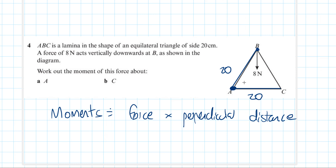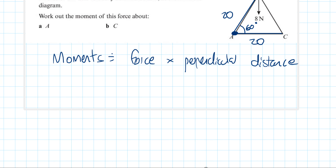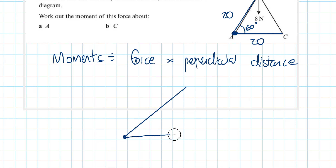To do this we're going to take an angle of 60 degrees because it's an equilateral triangle, so we know that the interior angles are 60 degrees. We end up with a diagram where this is 60 degrees, this is A and this is B. We draw our force going down, which is 8 Newtons.